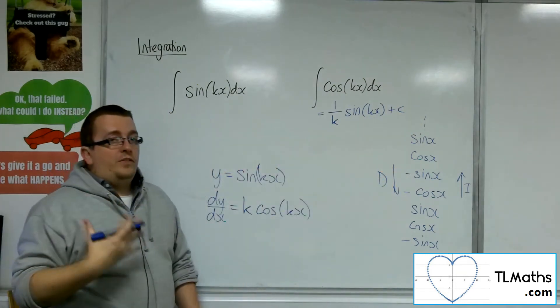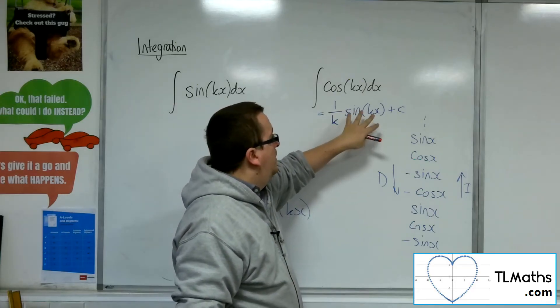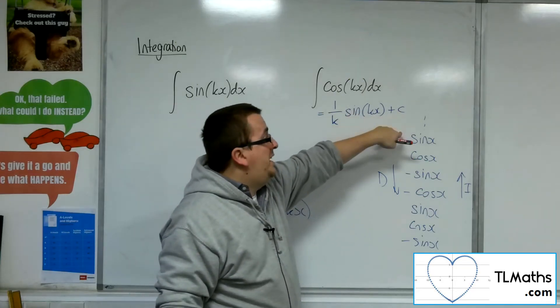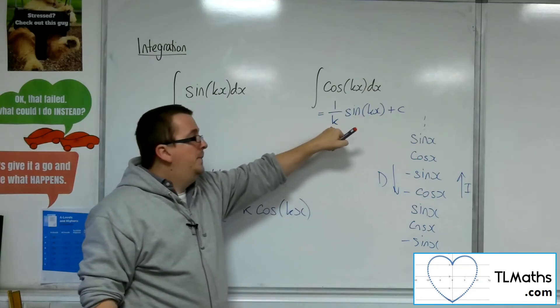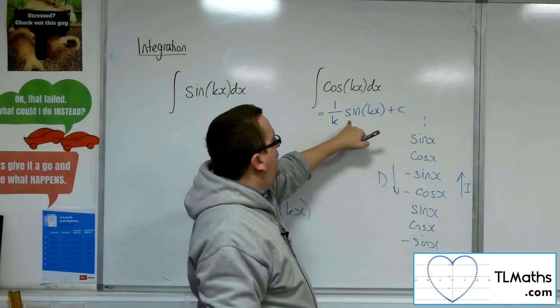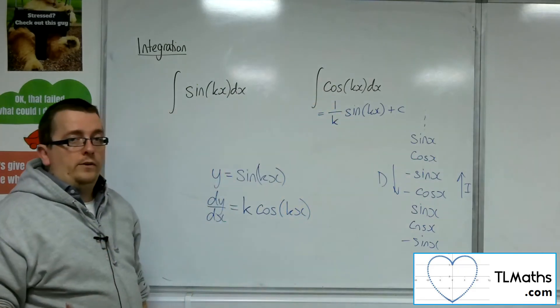Now, all you've got to think about is what will happen when I differentiate this bit in blue. The c goes, the k comes out to the front, multiplies with 1 over k to make 1, and the sine becomes cosine, which reduces it back to what I've got there. So it works.